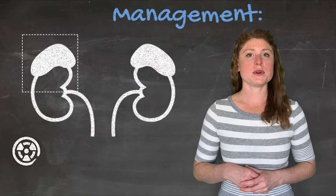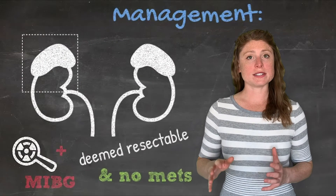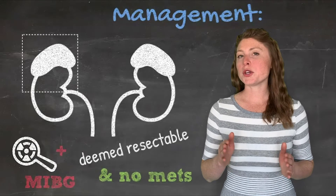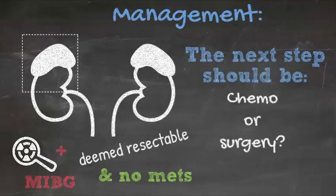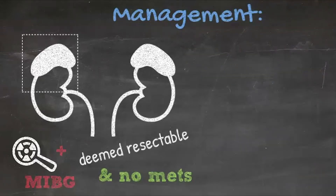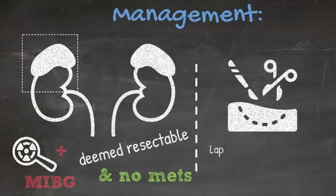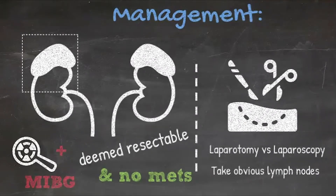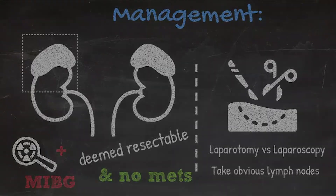A child presents with a right-sided adrenal mass with no evidence of metastasis — what are your next steps? That child could be treated with primary resection of the mass. If there's no evidence of other tumor and the mass looks resectable, I would treat that patient with a laparotomy and resection. Some people would approach that with laparoscopy, depending on the size of the tumor.